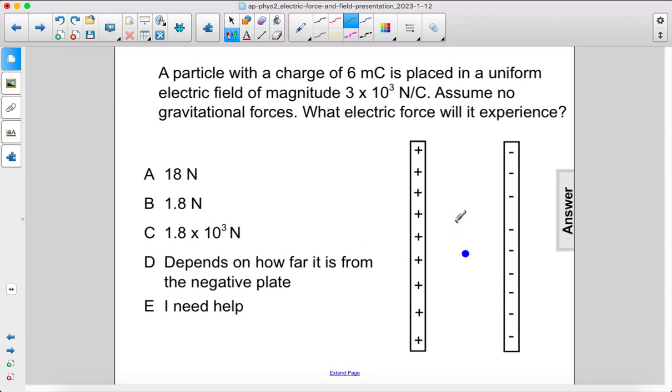A particle with a charge of 6 millicoulombs or 6 times 10 to the negative third coulombs is placed in a uniform electric field of magnitude 3 times 10 to the third newtons per coulomb. Assume no gravitational forces. What electric force will it experience?